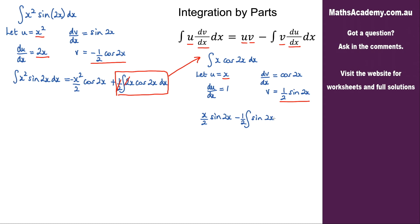So we get x over 2 sine of 2x, minus — integrating sine gives negative cosine, so the two negatives make a positive — integrating sine of 2x gives negative one half cosine 2x, so that half and this half give a quarter. We get a quarter cosine of 2x, plus the constant of integration.